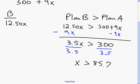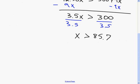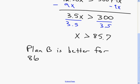Since x is greater than 85.7 and we're counting hours, I have to work more than 85 hours in a month. Rounding up, Plan B is better for 86 hours or more. The answer is Plan B is the better option for 86 or more hours worked in the month. Translate what the problem gives you into expressions and use the correct inequality based on how the problem is worded.